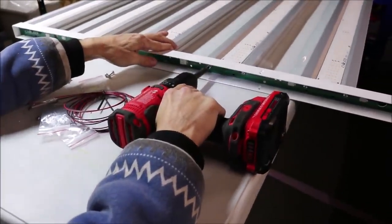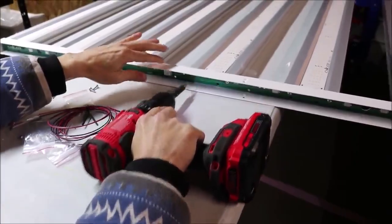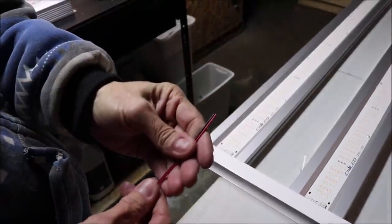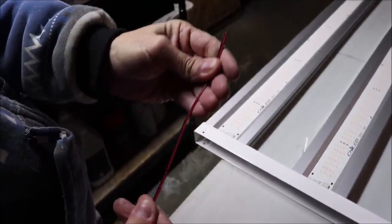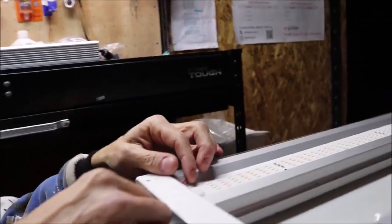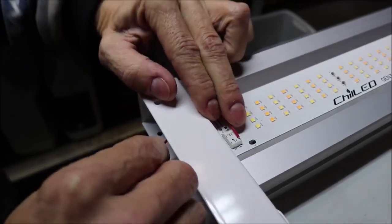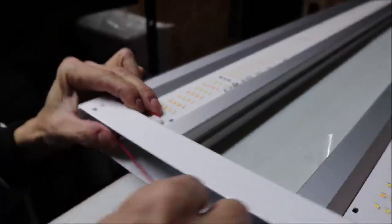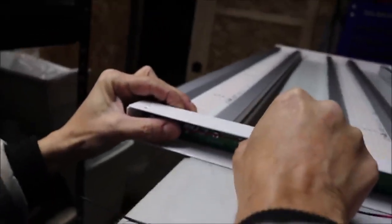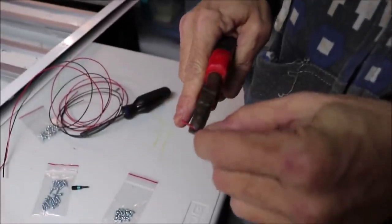After we got that all squared away, it was time to start measuring out all of our wires - our positive and negative wires for the light boards. Super easy. Shoot them up through the holes and just go ahead and measure them back where the connectors are.